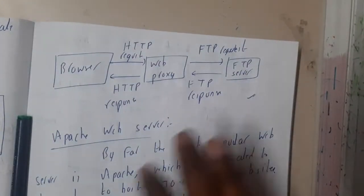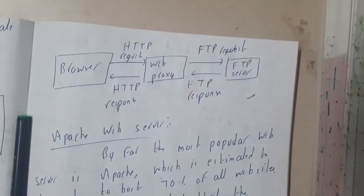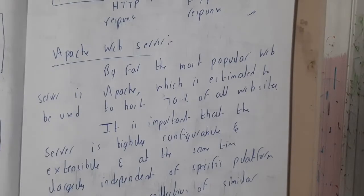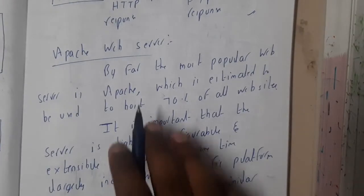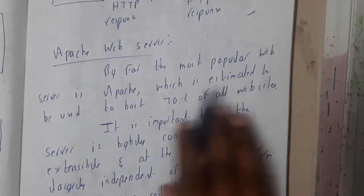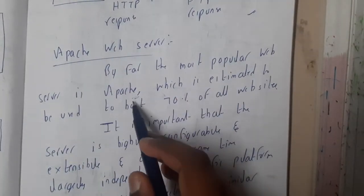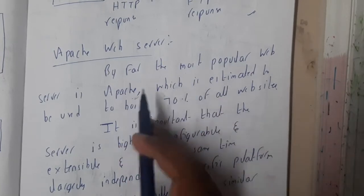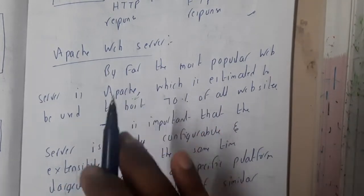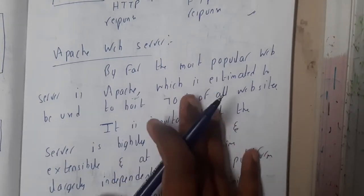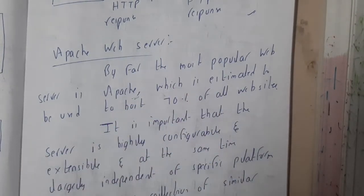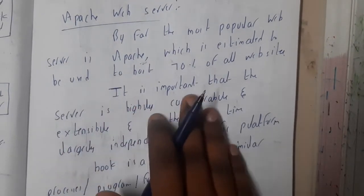Whenever you are drawing any kind of diagram, please write it along with their explanation — that will give you marks. Similarly, Apache Web Server: by far the most popular web server is Apache. Basically, 80 to 90 percent of the websites we use every day are running on Apache Web Server.